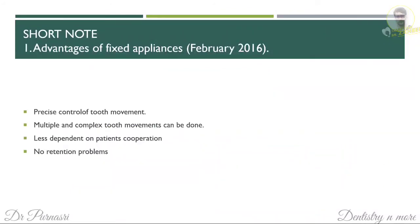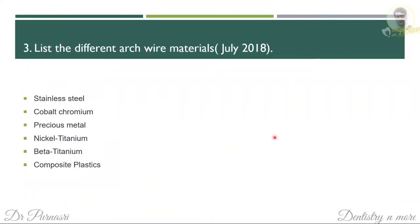Short notes on fixed appliances: advantages include precise control of tooth movement, ability to perform multiple and complex tooth movements, less dependence on patient cooperation, and no retention problems with the appliance. Different arch wire materials include stainless steel, cobalt chromium, precious metals, nickel titanium, beta titanium, and composite plastics.